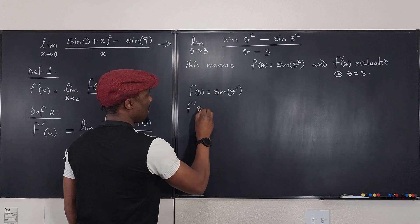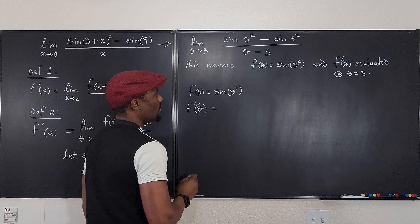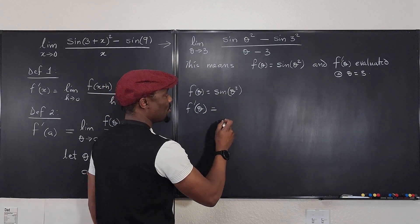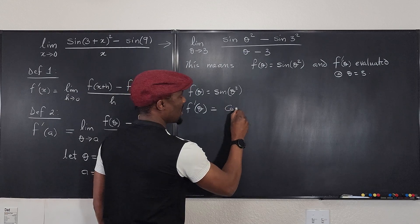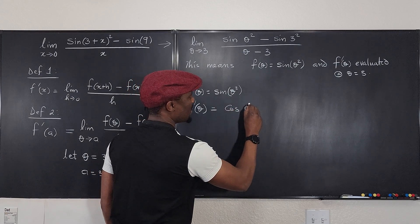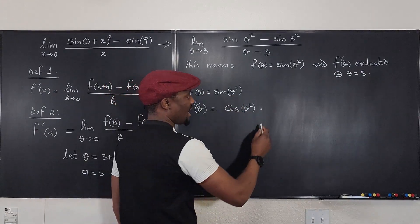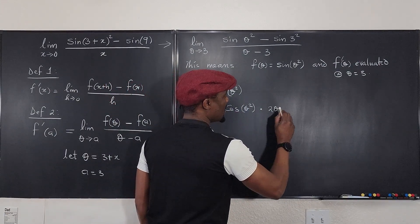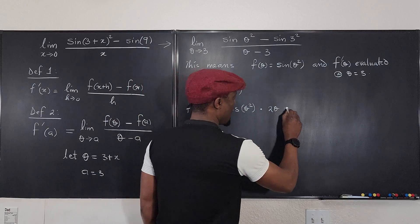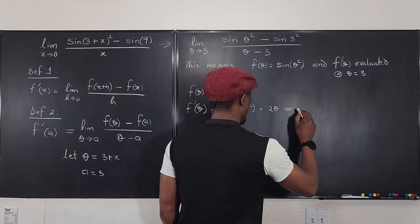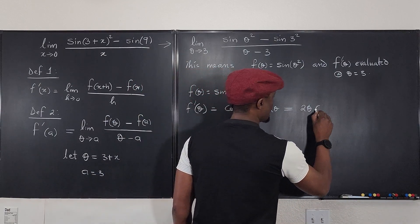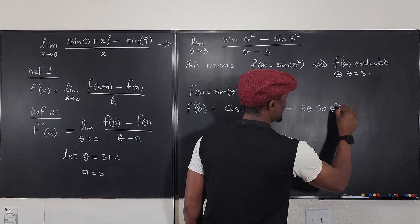So f prime of theta will be equal to what's the derivative of this? Using the chain rule, it's going to be cosine theta squared multiplied by the derivative of the inside, which is going to be 2 theta. So our answer is going to be 2 theta cosine theta squared.